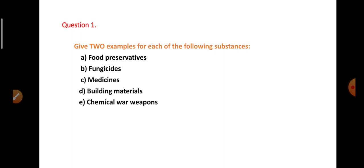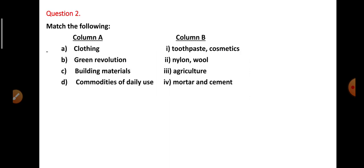And now it's your turn to do some work. Do as directed. Question 1: Give two examples for each of the following substances - food preservatives, fungicides, medicines, building materials, chemical war weapons. Question number two: Match the following.